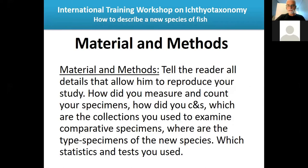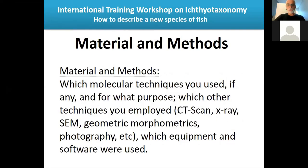In the Materials and Methods section, tell the reader all details that allow them to reproduce your study: how you measured and counted specimens, how you cleared and stained them for studying bones and cartilage, which collections you used for comparative specimens, where the type specimens are deposited, which statistics and tests you used to demonstrate your species is a separate lineage, which molecular techniques were used, and which other techniques such as CT scan, X-ray, scanning electron micrography, geometric morphometrics, and photography were employed.